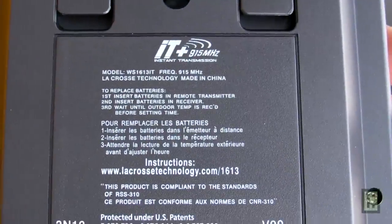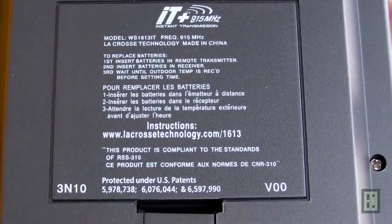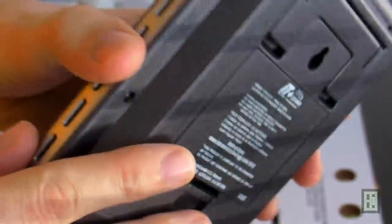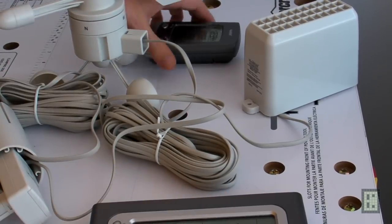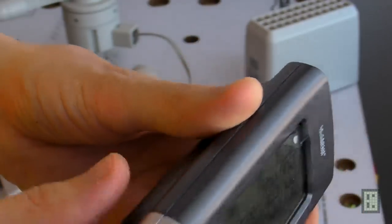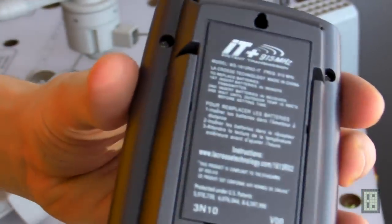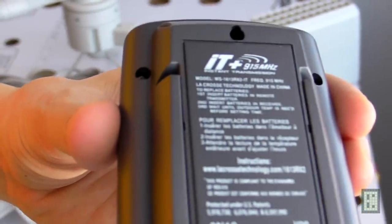What you get in the box is this large LCD receiver that has all the information displayed from all the sensors, and there is also a smaller receiver that has only few of the information from the sensors.